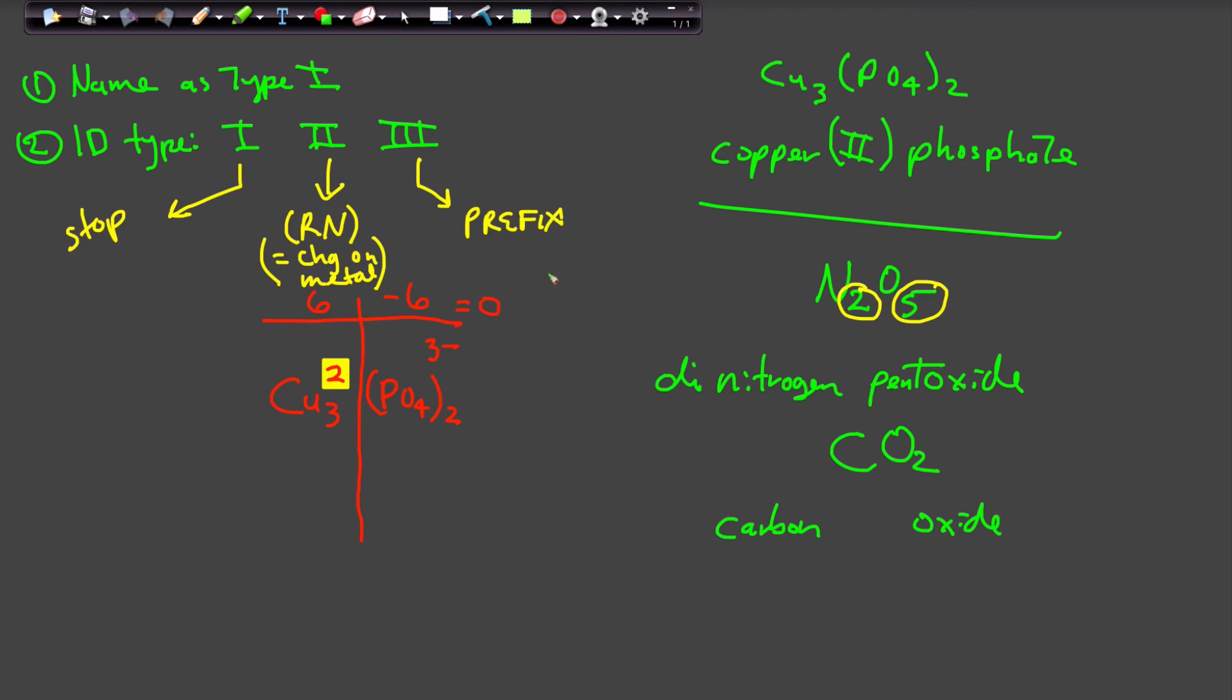So this is Type 3. It means you need to add a prefix. So this is going to be dioxide. But what's this going to be? It's just going to be carbon, not carbon monoxide, because the first element listed can have any prefix except mono. And with that, that's a brief overview of how to give the name to a formula.